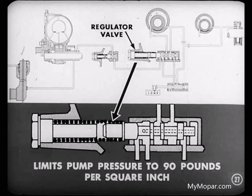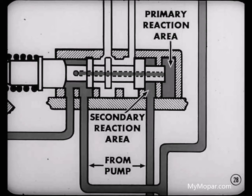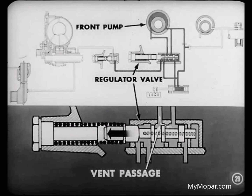The valve which regulates the oil pressure is called a regulator valve. This valve limits pump pressure to 90 pounds per square inch for neutral and all forward speeds. How does this regulator valve operate, Jack? Quite simply, Cliff. Oil from the pump enters the regulator valve and passes to the primary and secondary reaction areas of the valve. Pressure in these reaction areas combines and forces the regulator valve to move against its spring pressure. This action opens a vent passage to the suction side of the front pump, thereby keeping the oil pressure in the main passages to 90 pounds per square inch.